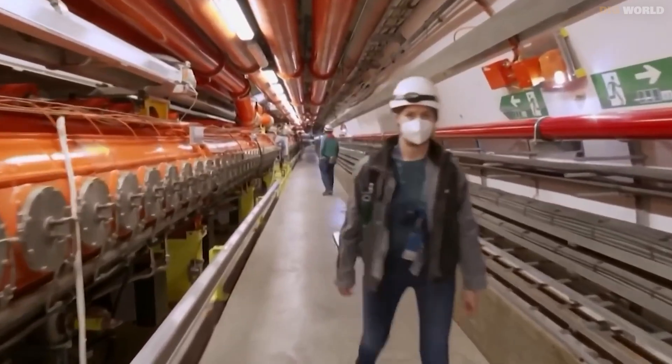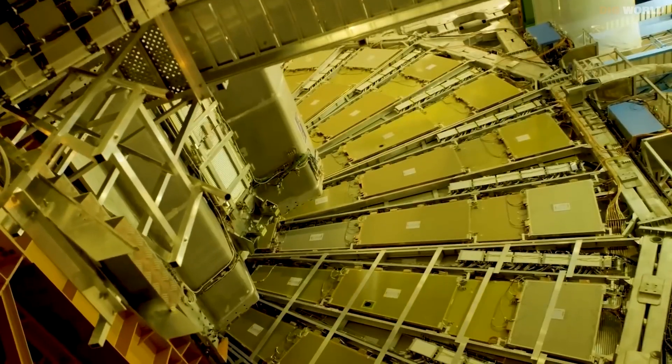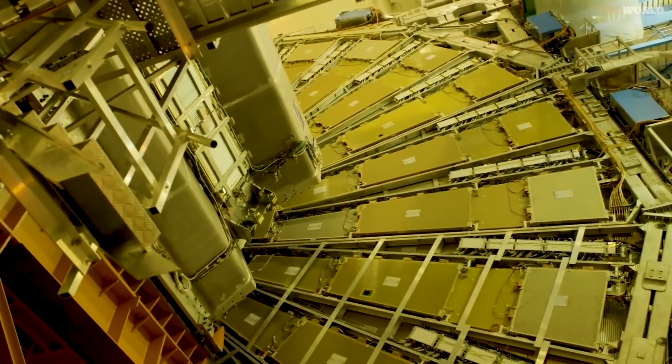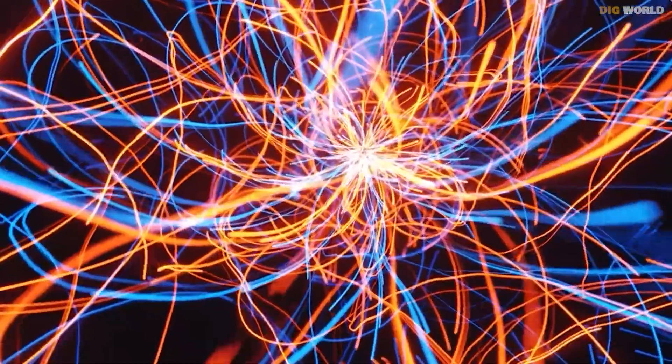Proton beams hurtle around the ring in opposing directions until they meet with enough force to produce a slew of subatomic particles, including the Higgs boson. The data from 40 million collisions per second is then crunched by a massive detector array.